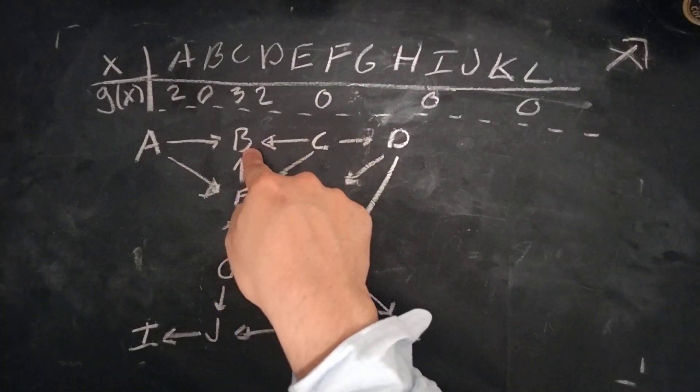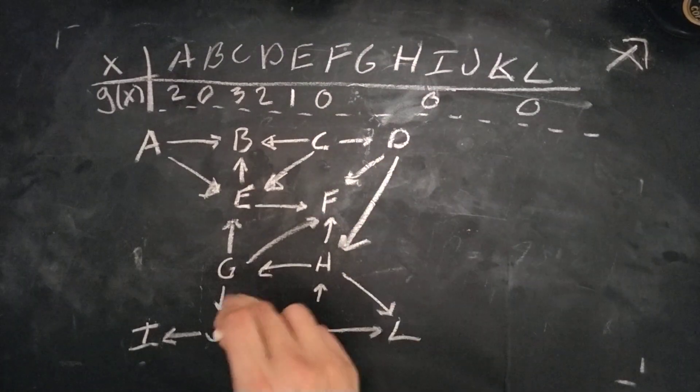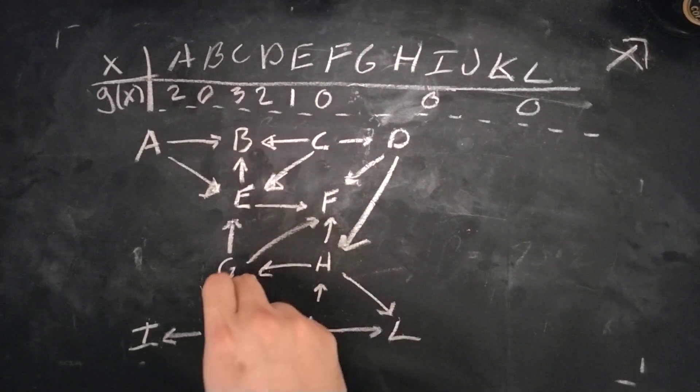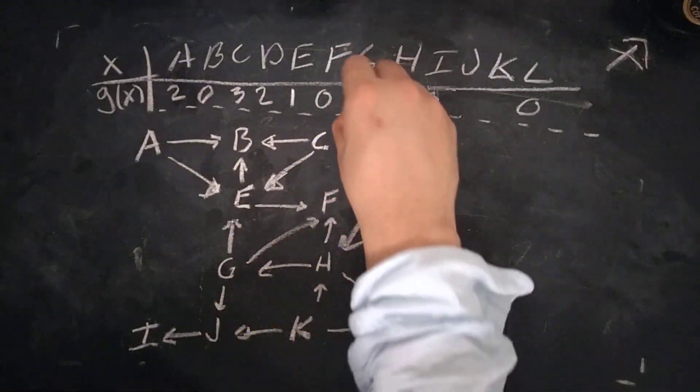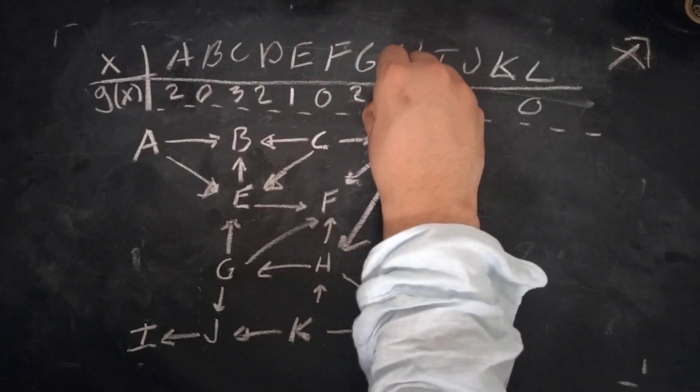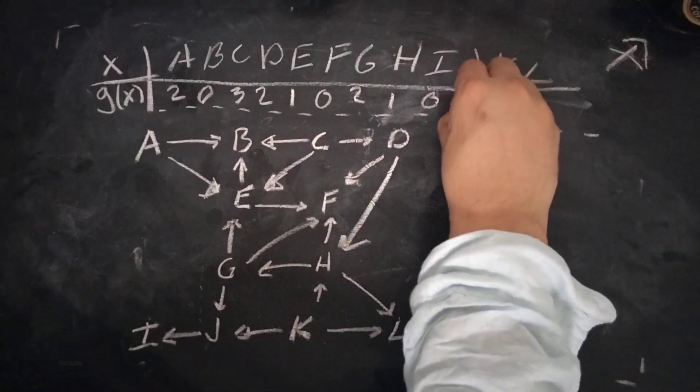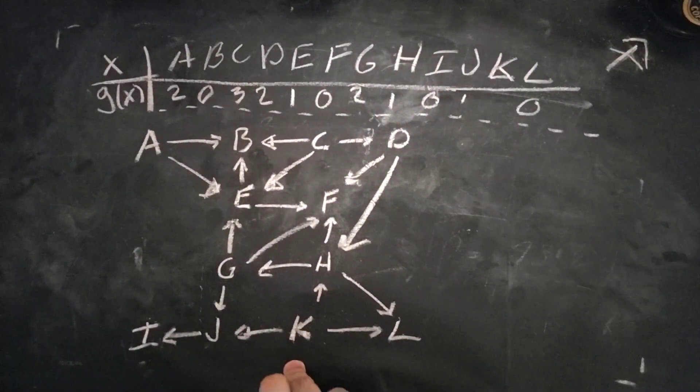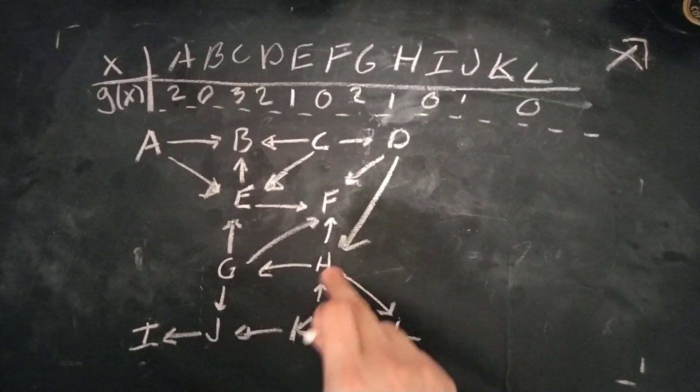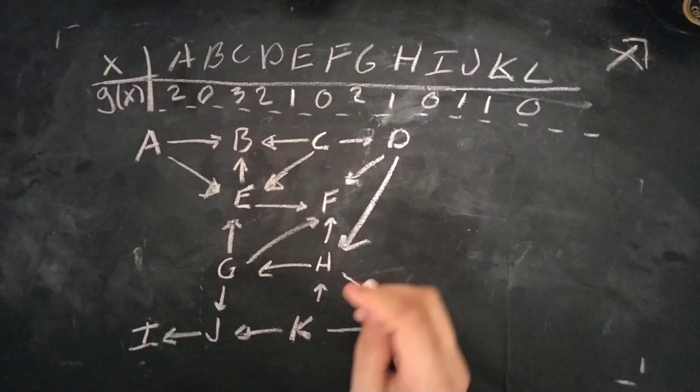Meanwhile, E, you can only move to B. So that has a Sprague-Grundy of 1. G, you can only move to 2 different values, E and J. So that's 2. From H, we can only move up to F. So that's 1. J can only move to I. That's 1. K can move to both J and H. That's a 1. And of course, L is 0.